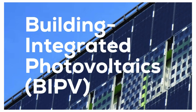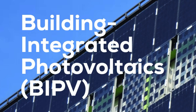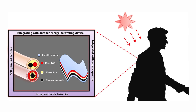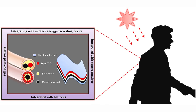Dye-sensitized solar cells are applied in building-integrated photovoltaics (BIPV), like power-generating windows and facades, portable power systems for electronic devices, wearable technology, and indoor applications for self-powering IoT systems and sensors, leveraging their transparency, color versatility, flexibility, and efficiency in low-light conditions.